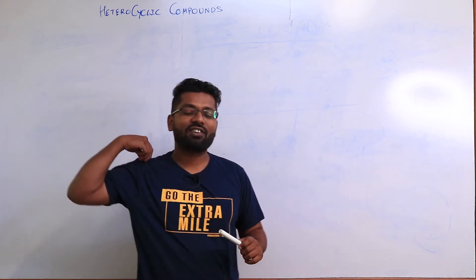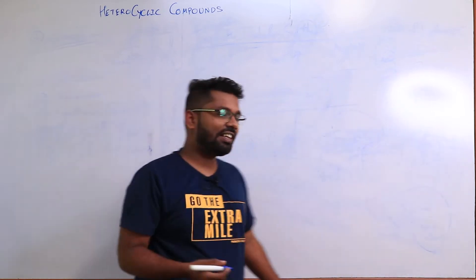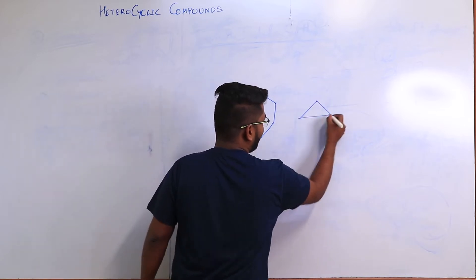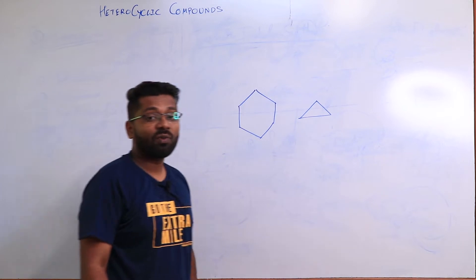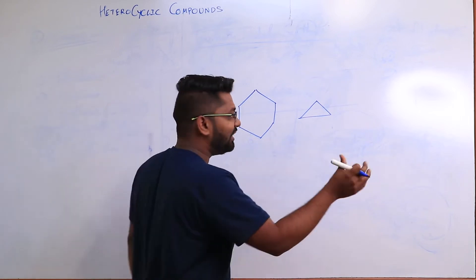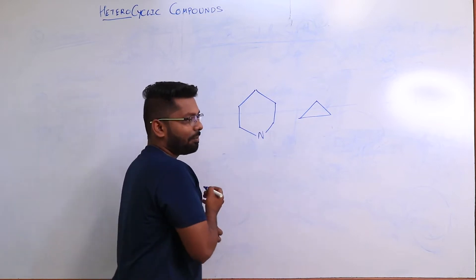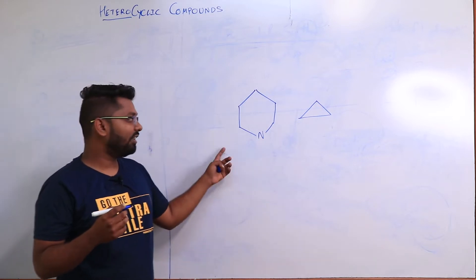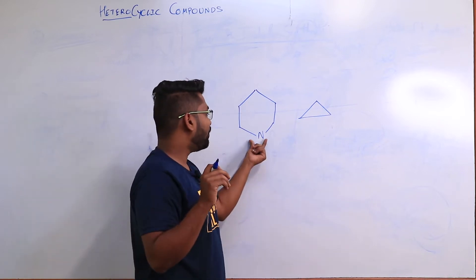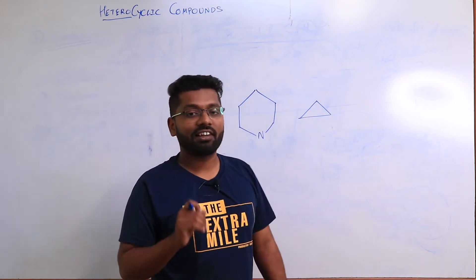What do you mean by a heterocyclic molecule? A cyclic molecule is a closed ring structure — not just benzene, any closed ring structure can be called a cyclic structure. Now, 'hetero' refers to a foreign or different particle apart from the regular atoms in the molecule. In benzene, all atoms are carbon, but if you introduce one alien atom or heteroatom, it becomes a heterocyclic compound.